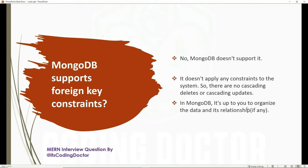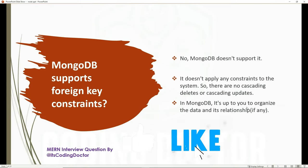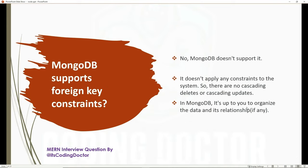The next question is: does MongoDB support foreign key constraints? The one-line answer is: it does not. MongoDB does not apply any constraints to the system, so there are no cascading deletes or cascading updates. In MongoDB, it is up to the developers to organize the data and its relationships — how they want to structure one document or one collection and their relationships.